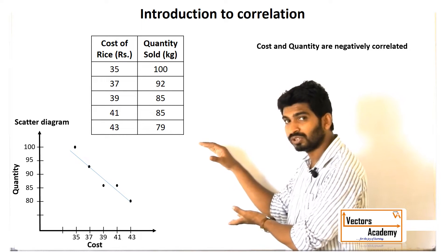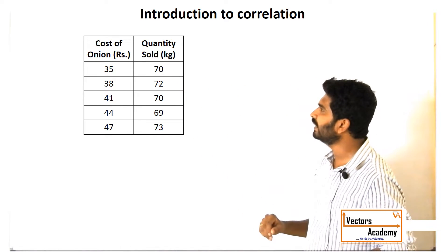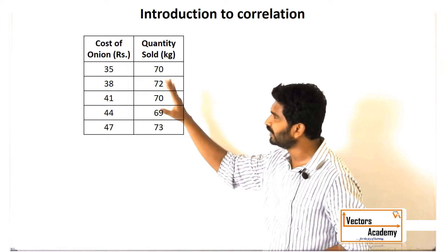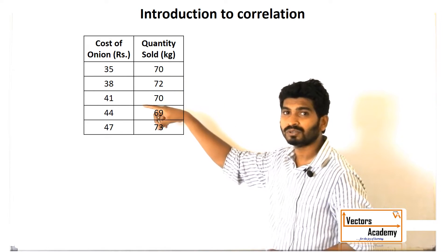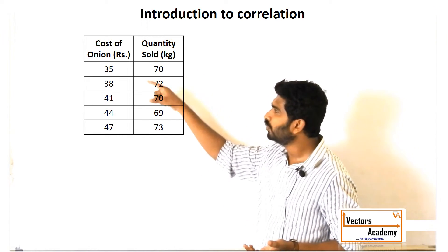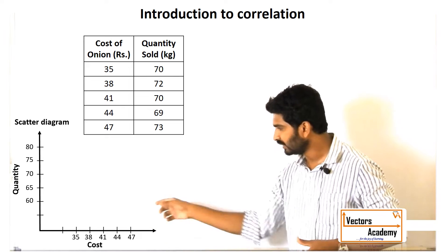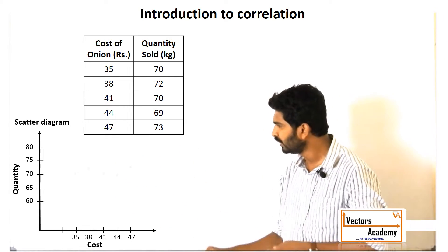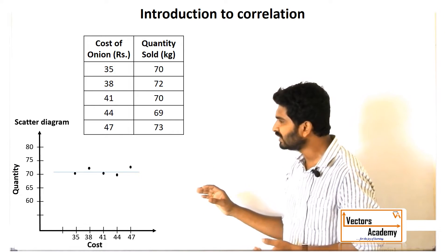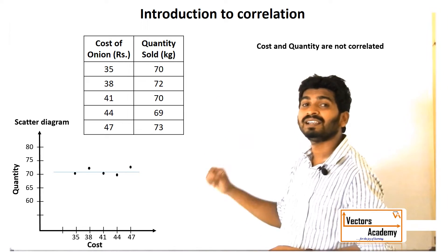The second example shows a table indicating the prices of onion and the quantity sold. If you see carefully, the price of onion keeps varying throughout the year, but the quantity sold does not vary much. There are some goods whose sale does not depend upon the price. In the scatter diagram, the x-axis denotes the price and the y-axis denotes the quantity sold. You can see the graph neither increases nor decreases, so I can say there is no correlation between the price and the demand of onions.